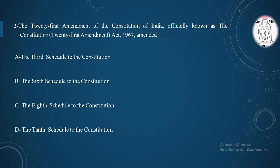Moving to our second question. The 21st Amendment of the Constitution of India, known as the Constitution 21st Amendment Act 1967, amended the option A. Third schedule to the Constitution. Option B. The sixth schedule to the Constitution. Option C. The eighth schedule to the Constitution. Option D.